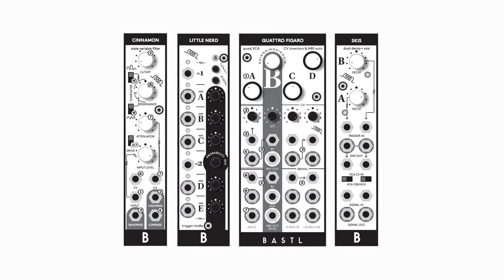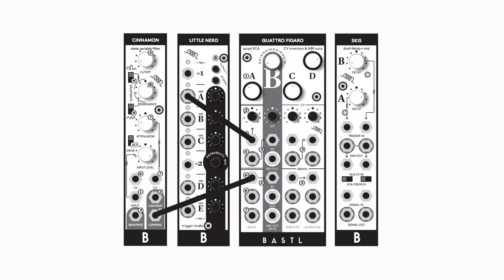First we need to patch the square wave to the first VCA's CV input. If you want the sound to have the final envelope as a volume curve, you can patch the sound source to the first VCA's audio input as well. I'm using a cinnamon filter in self-oscillation as a sound source. If you just need it as a voltage, you must patch a constant voltage to the first VCA signal input.